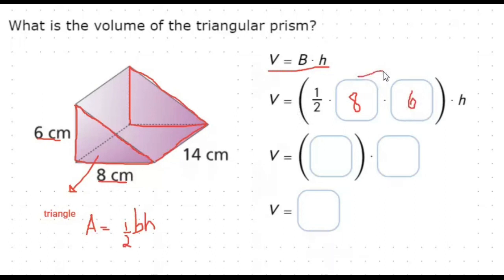Then we will multiply them. We will get 48 and divide it by 2. This would be equal to 24. Then, multiply it by the height of the prism, which is 14 centimeters. Then we have 336 cubic centimeters. This is now the volume of a triangular prism.